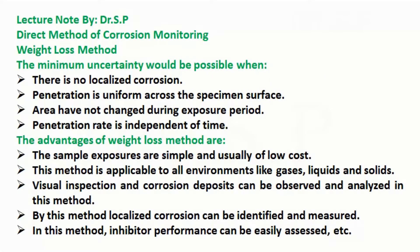The minimum uncertainty would be possible when: there is no localized corrosion; penetration is uniform across the specimen surface; the area has not changed during the exposure period; and the penetration rate is independent of time.